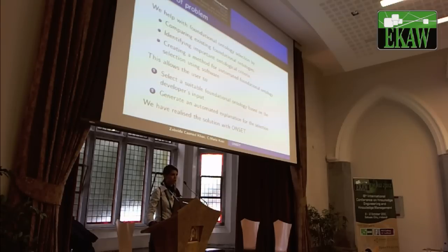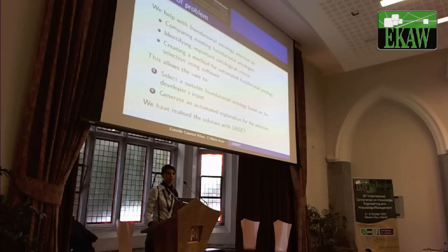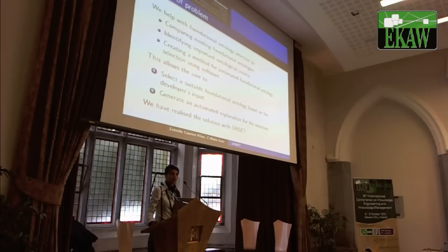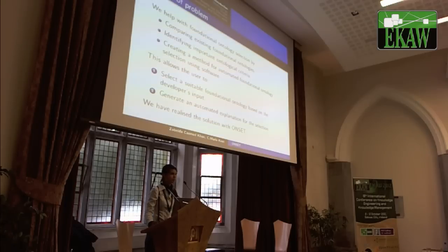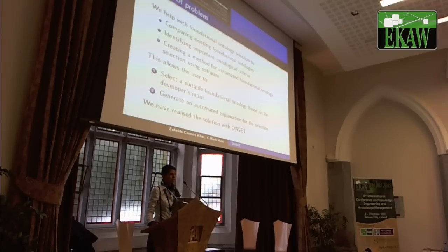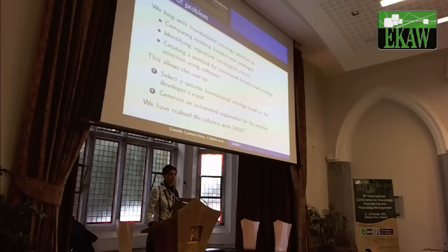Our approach to solving this problem involved firstly forming a comparative study of existing foundational ontologies, looking at published works and creating our own criteria. We then identified important ontological criteria and created our own method — guidelines for a user to perform foundational ontology selection. This allows the user to select a foundational ontology based on their requirements and use our software to generate an explanation for the choice. We realised this solution with our software tool, Onset.